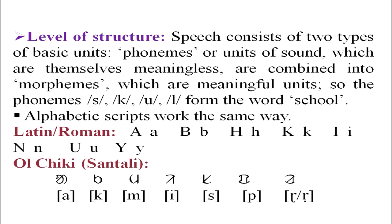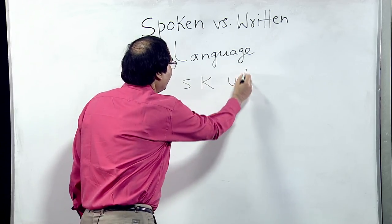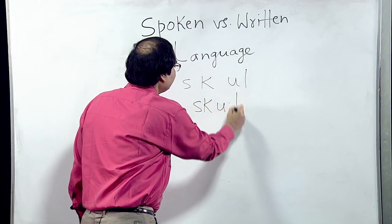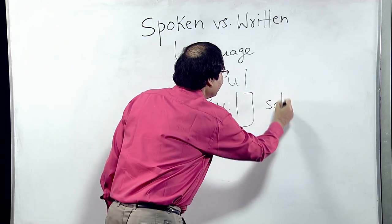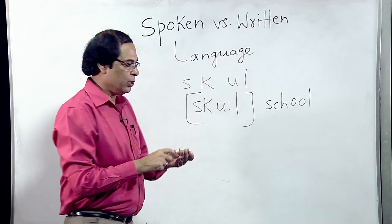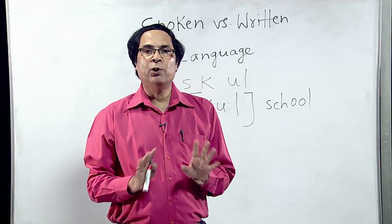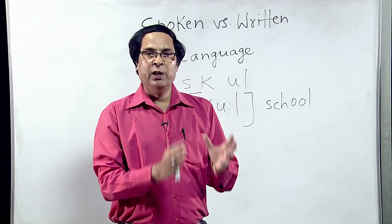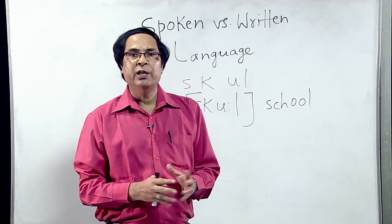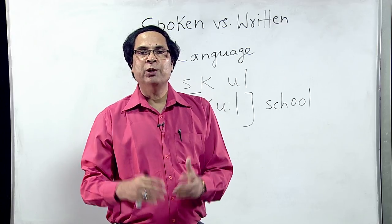The next difference is Level of Structure. Speech consists of two types of basic units: phonemes, or units of sound, which are meaningless in themselves, combined into morphemes, which are meaningful units. For example, the phonemes s, k, oo, l form the word 'school.' Similarly, alphabetic scripts have a finite set of symbols called graphemes that combine to produce larger units — morphemes, words, and phrases. Latin uses A, B, C, D, E, F, G, H, etc. The Olchiki script, used for Santali, is also alphabetic, using symbols that combine meaningless elements to produce meaningful ones.